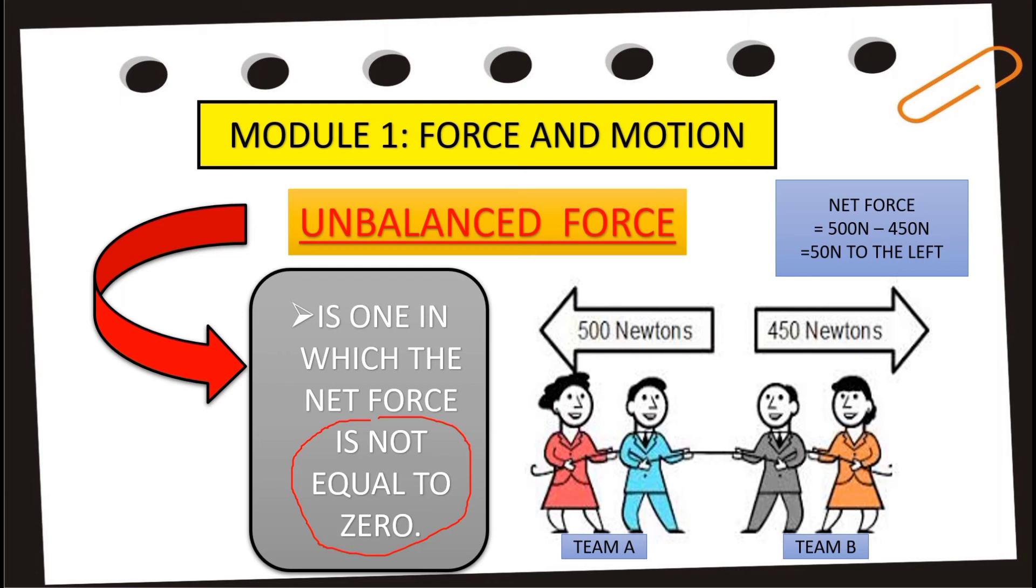In fact, we have a net force of 50 newtons from the difference of the two forces. And the object will move to the left. And that is unbalanced force.